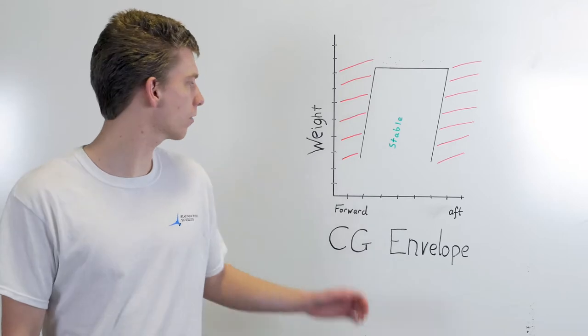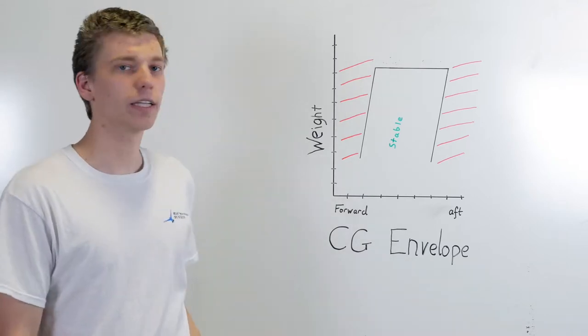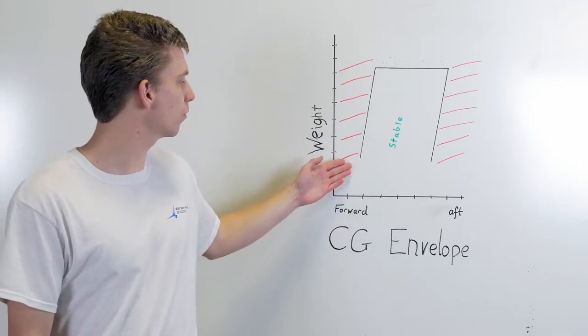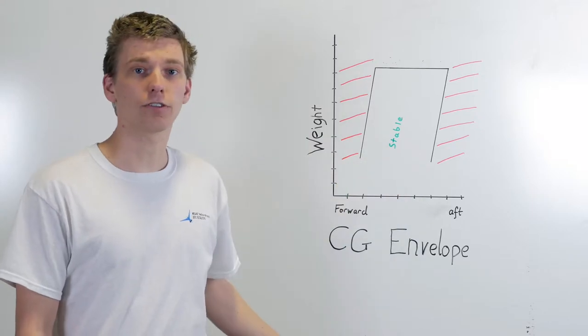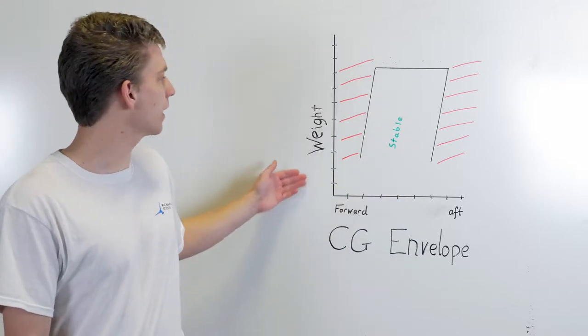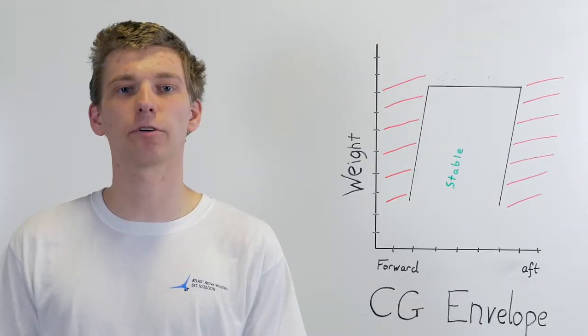These limits are defined by the aircraft's center of gravity envelope. This envelope defines the most forward and aft an aircraft's center of gravity can be for any given weight.